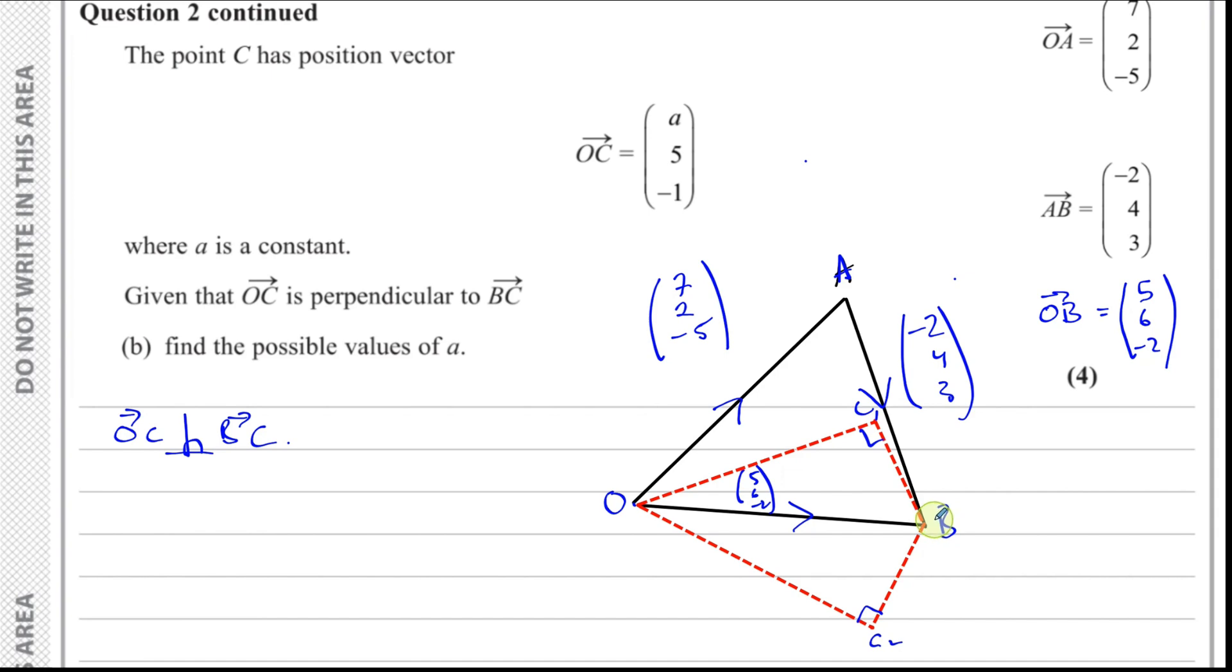What we can do here is we can understand that when two vectors are perpendicular, the dot product or the scalar product is equal to 0. So the dot product of OC and BC is going to be equal to 0. We have to know what OC is, which we are given but with a missing, and we have to find what BC is, the vector from B to C.